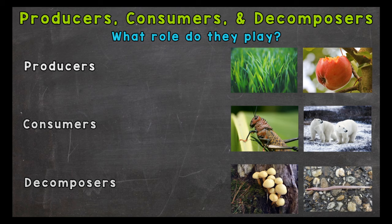Let's start with producers. Producers have the unique ability of taking energy from the Sun and converting it to chemical energy that can be used on Earth. This process is called photosynthesis. Basically, producers produce or make their own food.